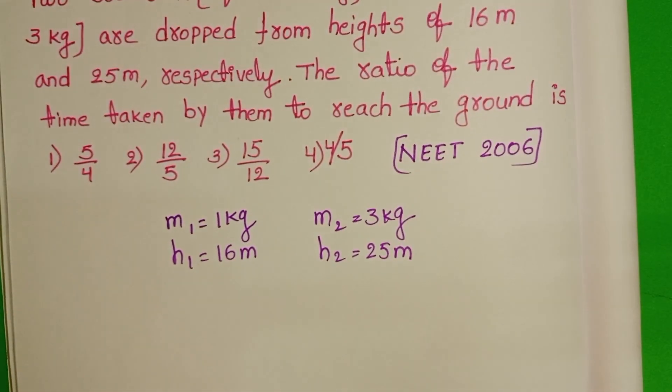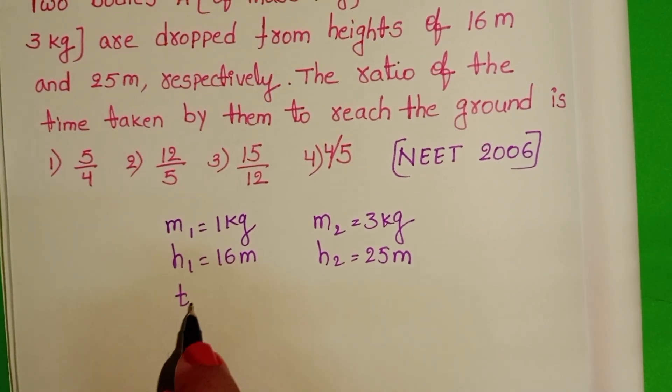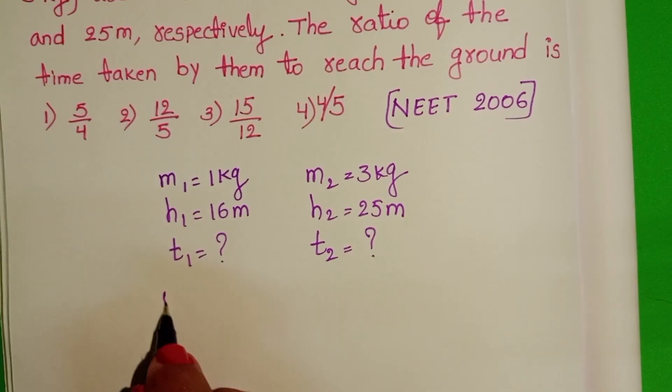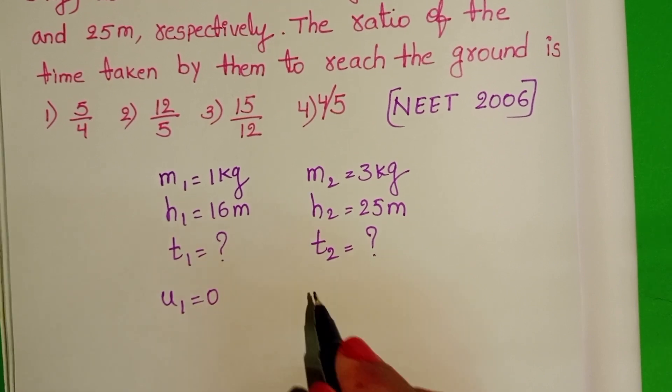We have to find out the time taken by the two bodies to reach the ground. Initial velocities of these two bodies are 0.